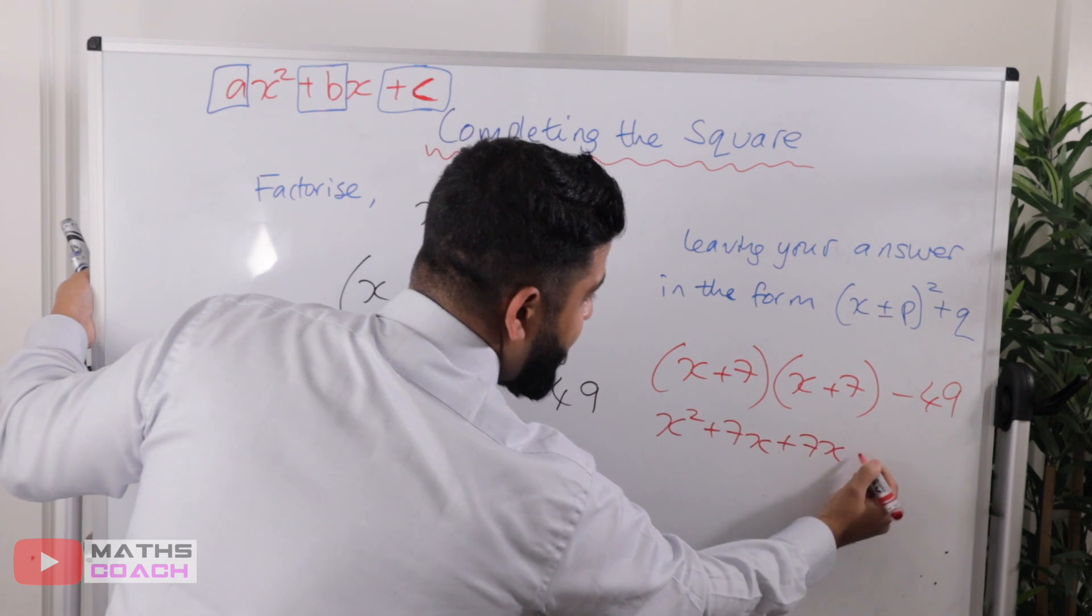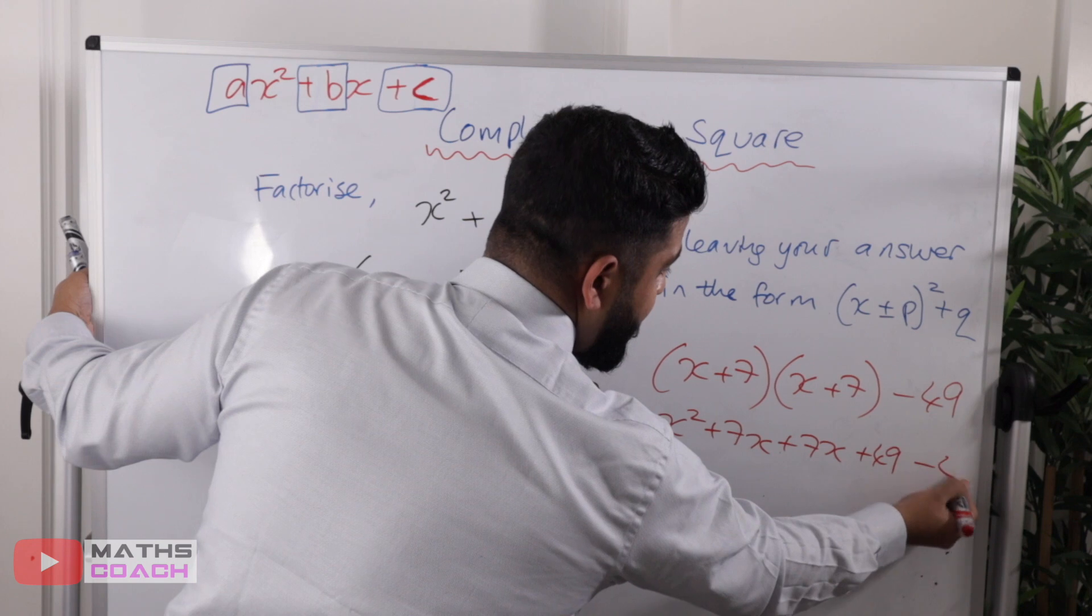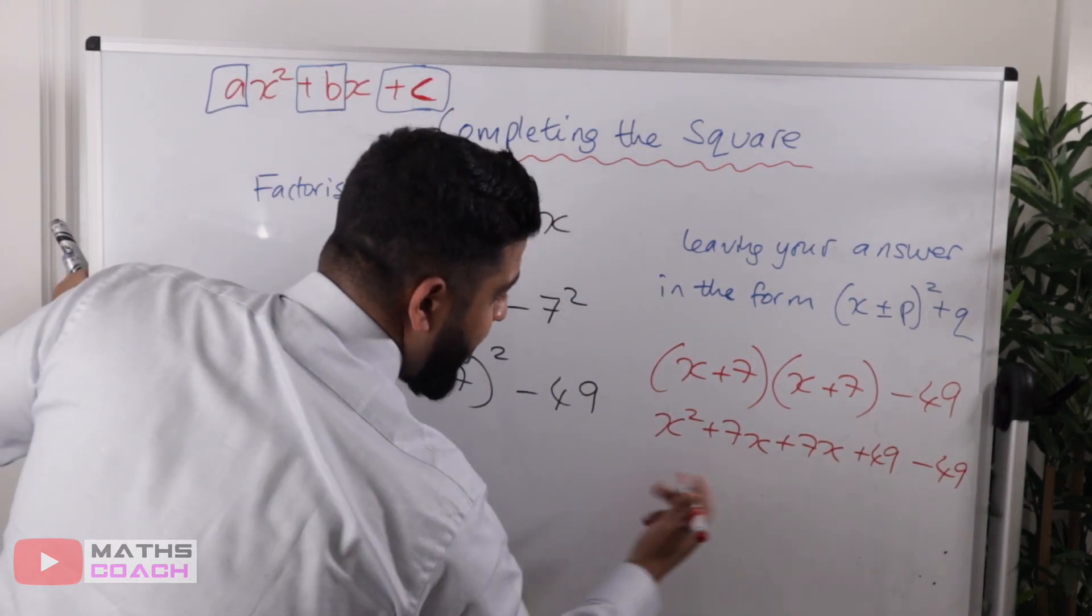x times by positive seven is plus 7x. Positive seven times by x is plus 7x again. And then seven times seven is plus forty-nine. And then we've got the minus forty-nine here. So we can add that here as well.